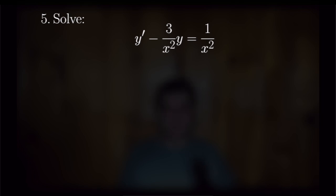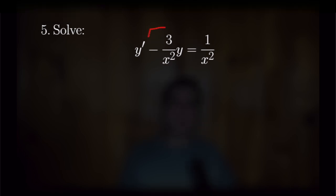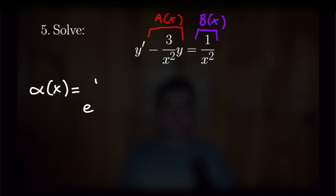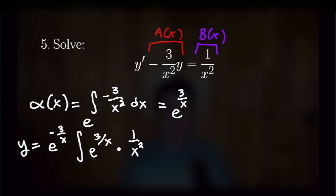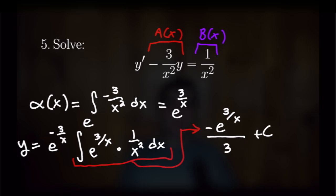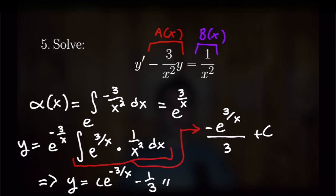For our fifth and last problem, we want to solve the first order linear differential equation y prime minus 3 over x squared times y is equal to 1 over x squared. Our a of x is negative 3 over x squared and our b of x is 1 over x squared. The integrating factor is alpha of x equal to e to the integral of negative 3 over x squared dx, which evaluates to e to the power of 3 over x. Plugging into our formula gives y equal to e to the negative 3 over x times the integral of e to the 3 over x times 1 over x squared dx. Evaluating that integral gives negative e to the 3 over x over 3 plus c. Multiplying through by the integrating factor, our final answer is y equal to c times e to the negative 3 over x minus one third.